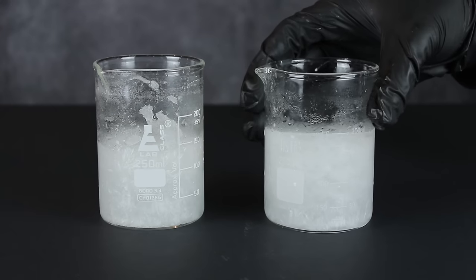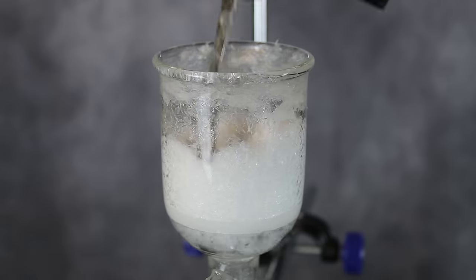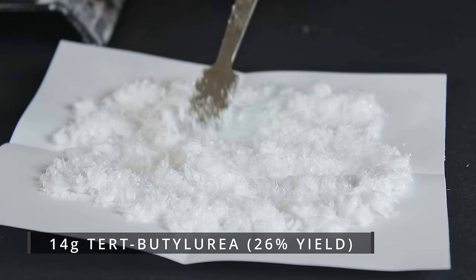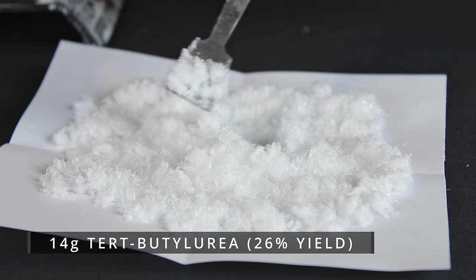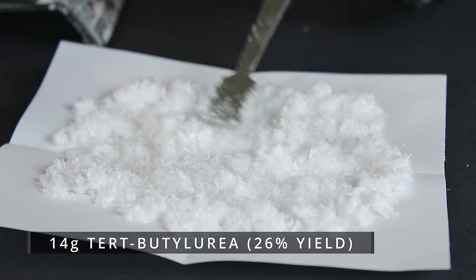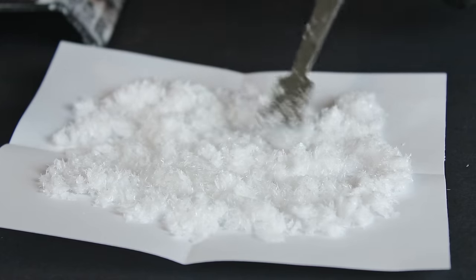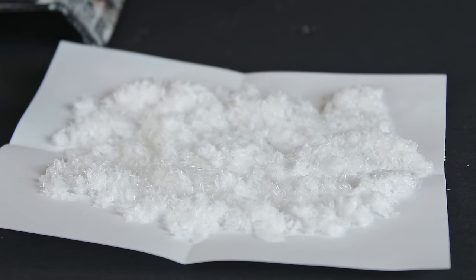After about 30 minutes, everything seemed to have crystallized, so I vacuum filtered off the solids and dried everything thoroughly on the pump. In total, I managed to produce a modest 14 grams of dry tert-butyl urea, which corresponds to a yield of about 26%. This was slightly lower than the expected 31 to 33% conversion mentioned in the paper, so no brownie points for yield. But it was still enough to move on to the tert-butylamine synthesis.